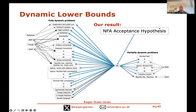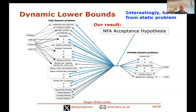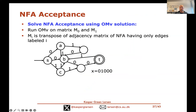What we show is that our NFA Acceptance Hypothesis implies the OMV conjecture, which in turn implies the hardness of online matrix-vector multiplication and thereby indirectly implies the hardness of all those dynamic problems. A very interesting point is that while the OMV problem is an online problem with vectors arriving one at a time, in our NFA Acceptance Hypothesis the whole input is given up front — and still this static problem implies the hardness of these dynamic problems.